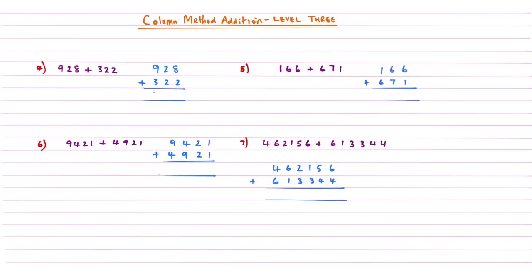Looking at some more examples with three-digit numbers and numbers in the thousands and hundred thousands. Example 4: 8 add 2 gives me 10, so we carry the 1 and write the 0. We read this 1 as belonging in the second column: 2 add 2 is 4, add that 1 there gives me 5. Move on to the last column: 9 add 3 gives me an answer of 12, and because it's a two-digit number we write it underneath the invisible column.